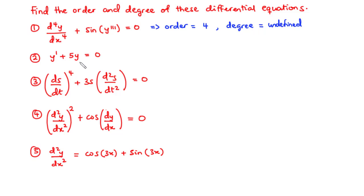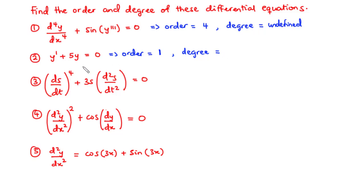Now let's move on to the second example: y prime plus 5y equals 0. To find the order, we have only one derivative — the first derivative of y with respect to x. That becomes the highest order derivative, so the order of this differential equation is 1. For the degree, since we do not have trig, log, or e to the power of the derivative of the dependent variable, this is a polynomial equation in its derivatives. The highest order derivative is y prime, and it is raised to the power of 1. Hence, the degree is also 1.